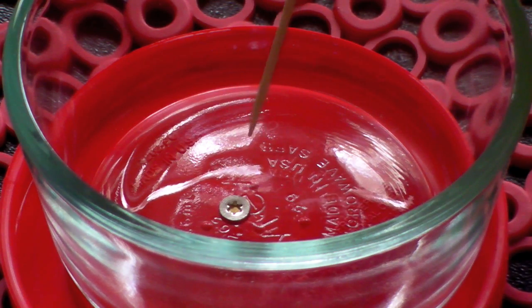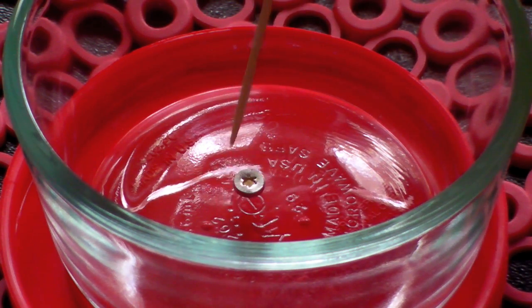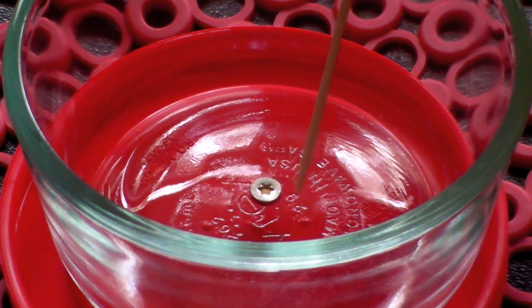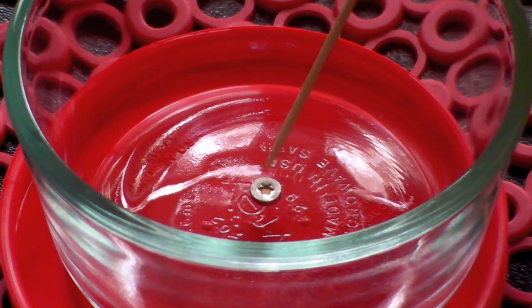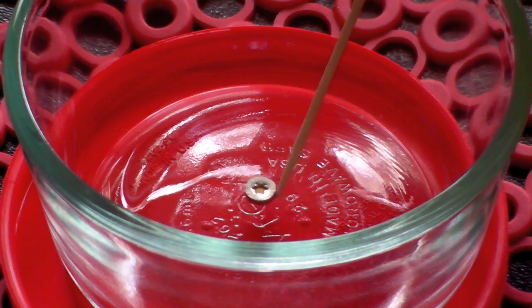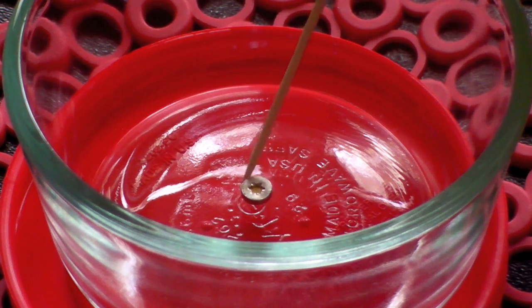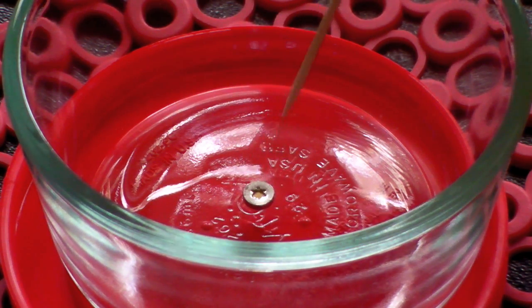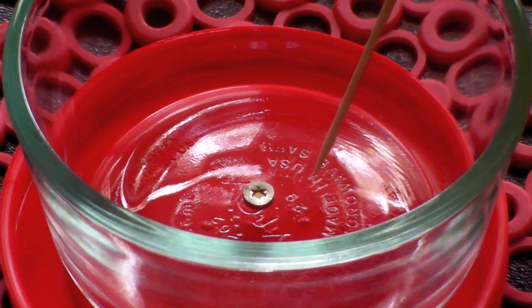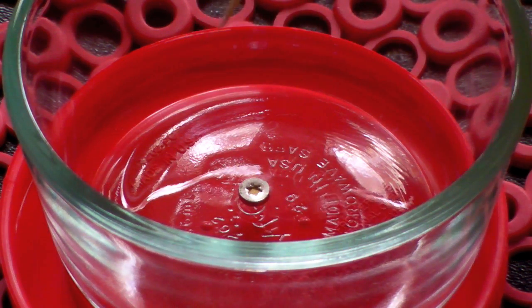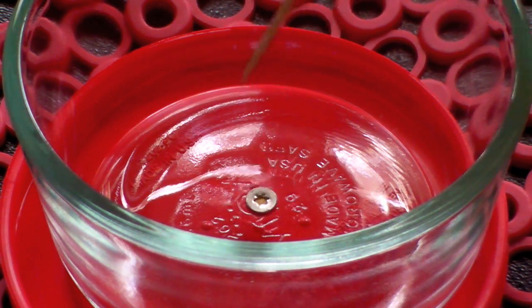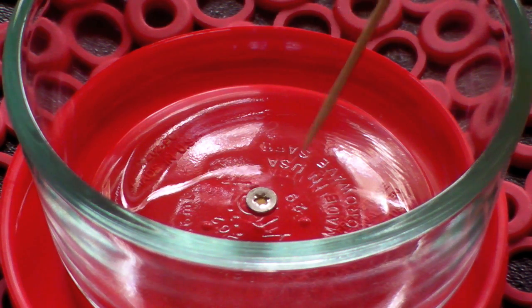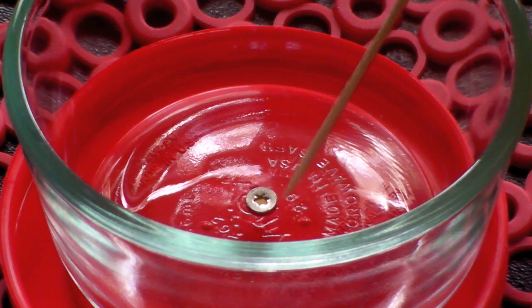You can see that the alpha particle source, the americium-241, is in the inside of the button. It's impregnated in some metal. Still, it's a good idea to wash your hands after doing this, or to wear gloves. I'm going to keep this in a glass jar and hopefully use it for a cloud chamber experiment coming up next.